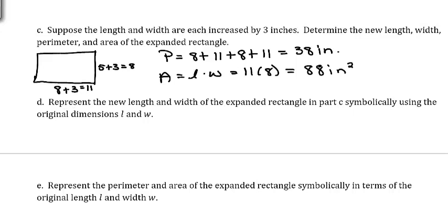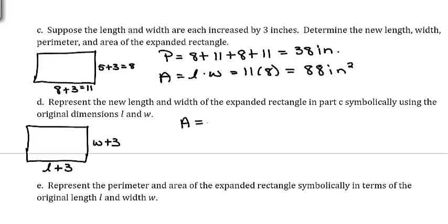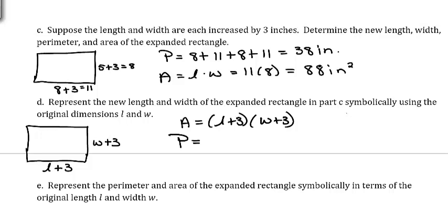We want to represent the new length and width symbolically using the original dimensions L and W. The new length is L plus 3 and the new width is W plus 3. The area of the expanded rectangle is (L + 3)(W + 3). The perimeter is 2(L + 3) + 2(W + 3).